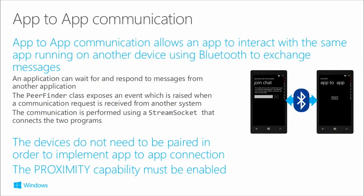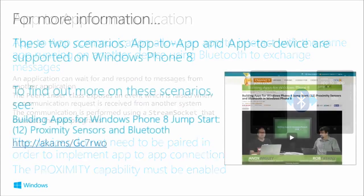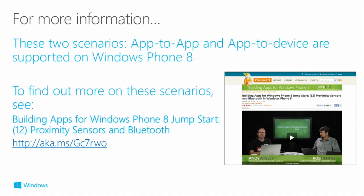App-to-app is interesting because you use this peer finder class. The apps running on two devices - one app can actually start searching for an instance of itself running on a nearby device. When it discovers it, events fire and they can set up a connection between them. The devices do not need to be paired - you still need the proximity capability. These have been in since Windows Phone 8, so if you want to find out more about those scenarios, there is a great video from the last Jumpstart series with myself and Rob Tiffany talking about the NFC and Bluetooth support in Windows Phone 8.